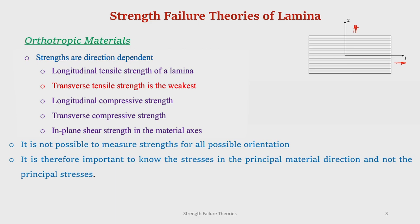Hence the strength in the transverse direction is less compared to that in the longitudinal direction. Therefore, the strengths are also direction dependent: the transverse tensile strength is the weakest, and then we also have the in-plane shear strength. Depending upon the directions, the strengths are different. Therefore, the strengths are direction dependent, and it is not possible to measure strength for all possible directions.